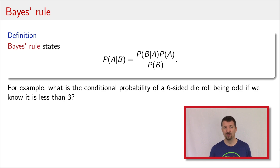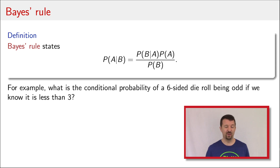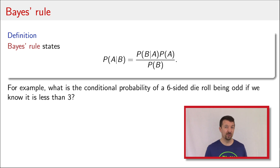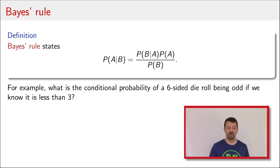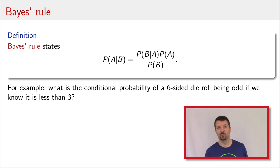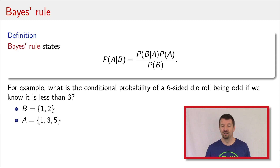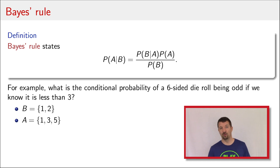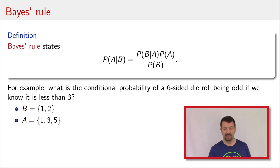Here's the first example of how to use Bayes' Rule, going back to our six-sided die rolling experiments. What's the probability that the roll is odd if we know that the roll is less than three? Intuitively, if you know it's less than three, there are only two possibilities: it's either a one or a two. Since each has equal probability, the probability of being odd — which is the probability of being one — is just one half. We define two sets: the event that the roll is less than three, that's a one or a two; and the event that the roll is odd, which is one, three, and five. We're trying to find the probability of A given B.